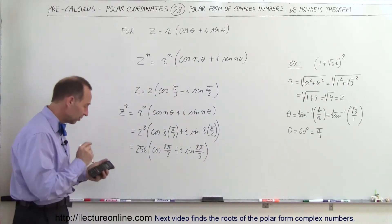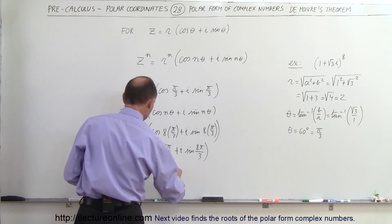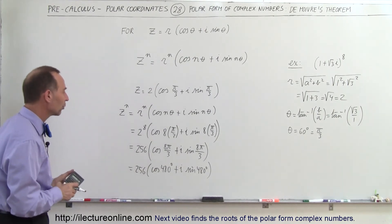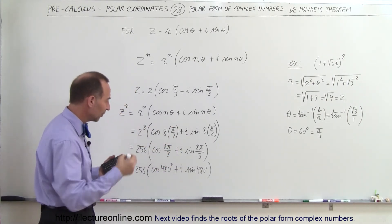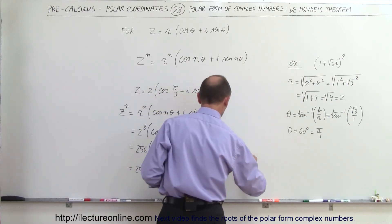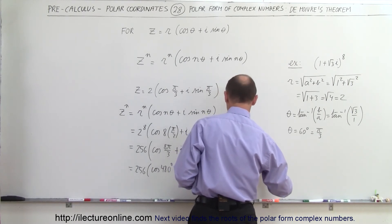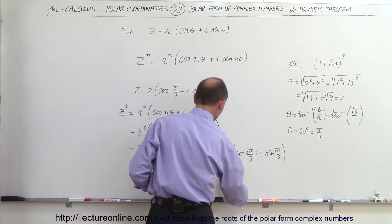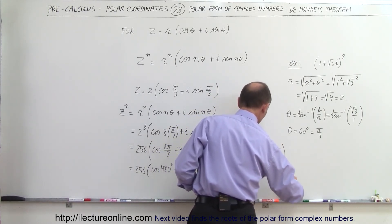In degrees it might be a little bit easier — 60 times 8 gives 480 degrees — so this is 256 times the cosine of 480 degrees, plus i times the sine of 480 degrees. You can do it either in radians or degrees. If we subtract 2 pi — because anytime you go around the circle every 2 pi you can take it out — 2 pi is 6 pi over 3, so 8 pi over 3 minus 6 pi over 3 leaves 2 pi over 3. Equivalently, subtracting 360 degrees from 480 degrees gives 120 degrees, so this is 256 times the cosine of 120 degrees, plus i times the sine of 120 degrees.